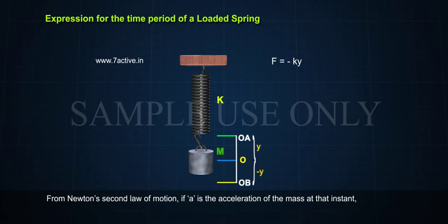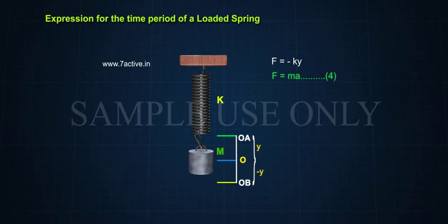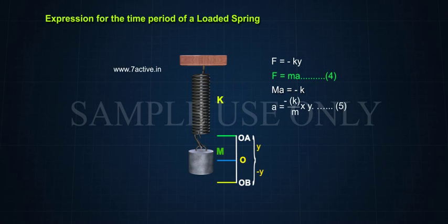From Newton's second law of motion, if A is the acceleration of the mass at that instant, F = MA. Comparing these equations, we get MA = -KY, or A = -(K/M) · Y.